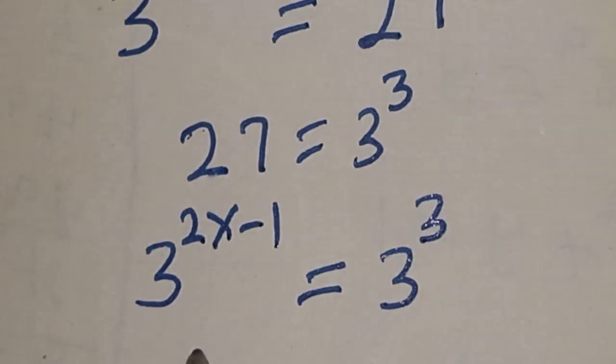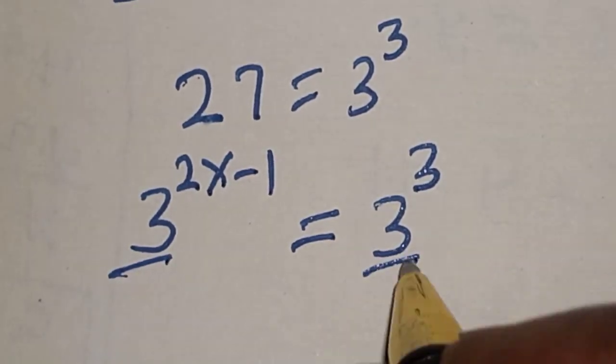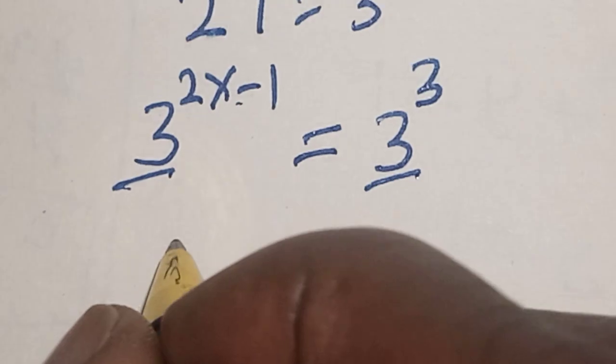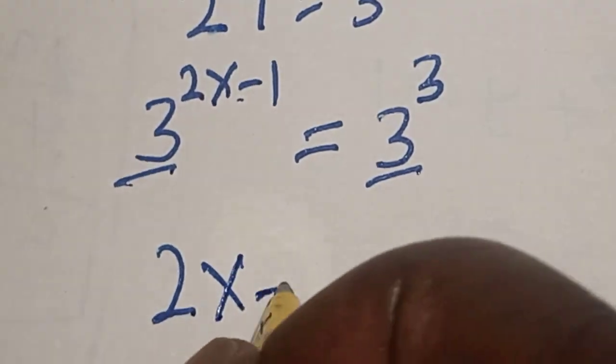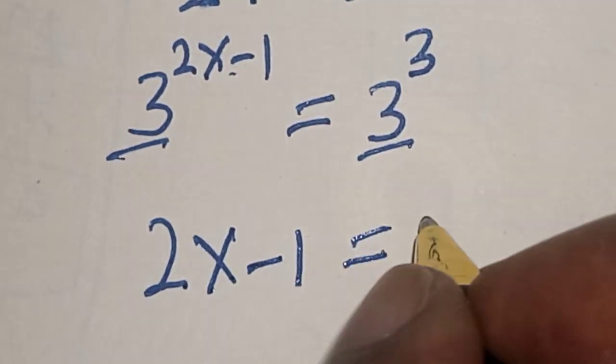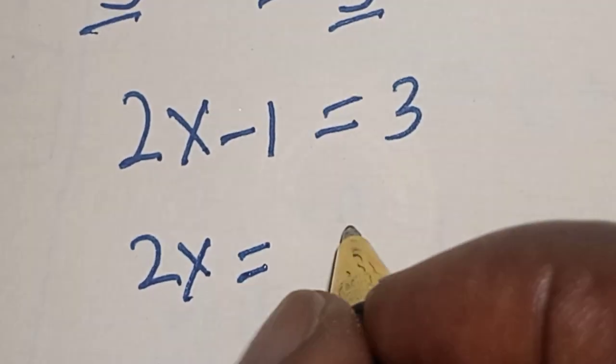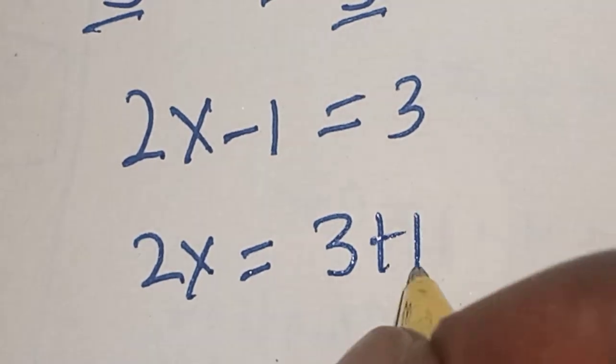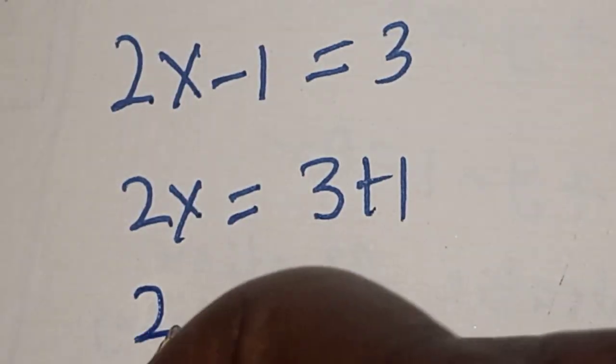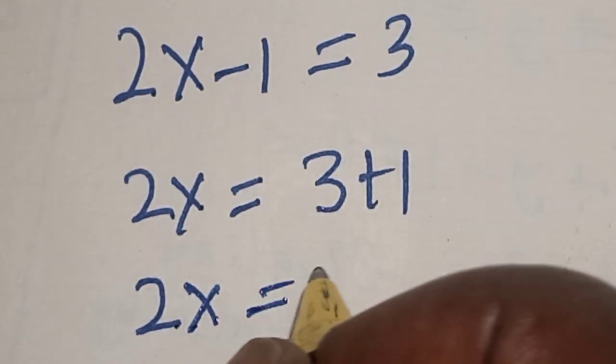They have the same base 3, so we work with exponents. 2s minus 1 is equal to 3. Let's collect like terms: 2s is equal to 3 plus 1, then 2s is equal to 4.